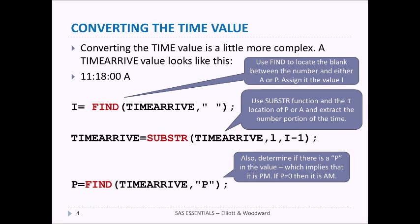That gives us a variable called time_arrive that just has '11:18:00' in it, without the A or the P. But we also want to determine if the value had an A or a P in it. In this case we look to see if it has a P, again using the FIND function. If it's PM, then P is going to be equal to some integer. If P is equal to 0, then the result must be AM.